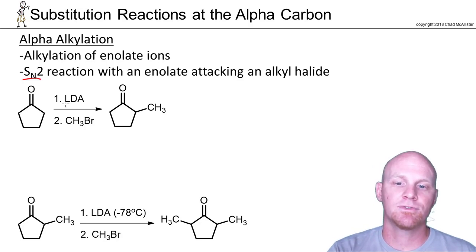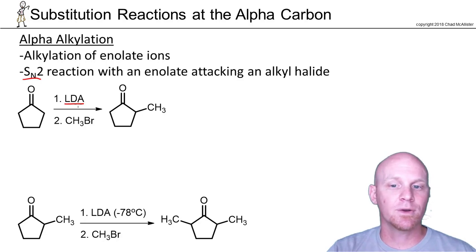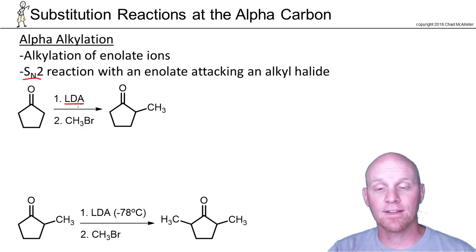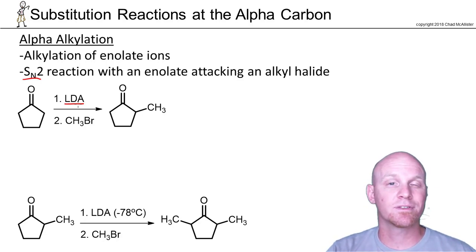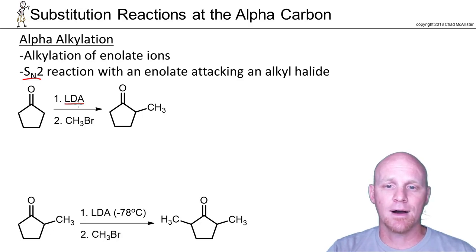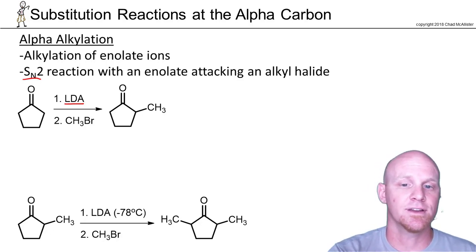The base you have to use is the strong base LDA. Hydroxide's not going to work because you have a lot of competing reactions — hydroxide could react with the alkyl halide, and it's going to be involved in the second step, as well as some other things we'll learn about in the future. So you've got to use LDA for alpha alkylation.